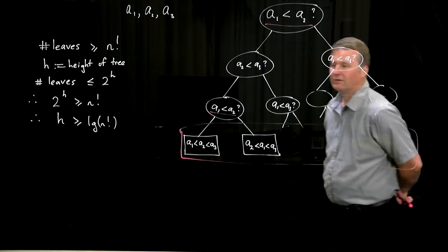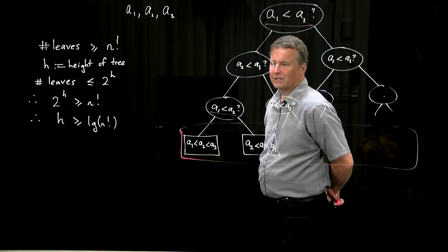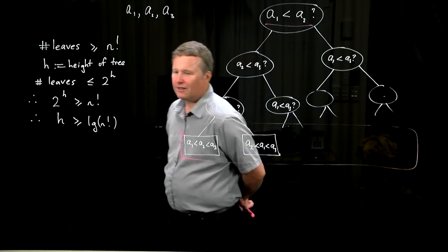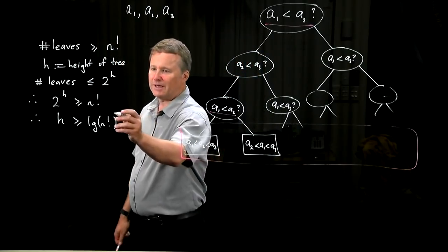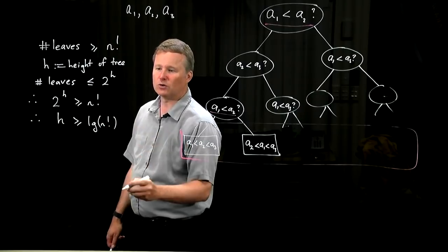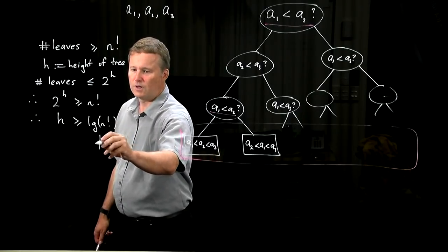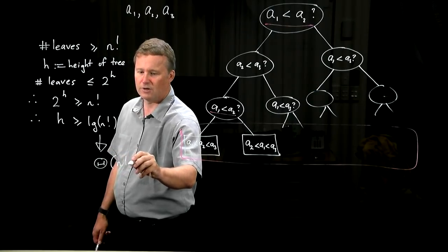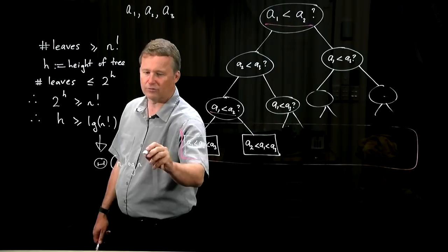What do we remember from the asymptotic analysis lecture? I hope you remember that we have estimated the growth rate of log of n factorial, and we know that, in fact, it doesn't matter what base of the log we have, but it's of order n log n, in fact.